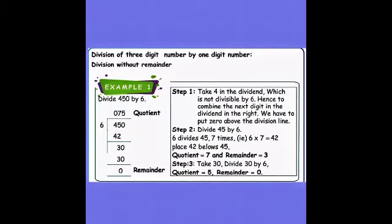Let's see the example sums. First one: division of three digit number by one digit number without remainder. Example 1: divide 450 by 6. Now we want to know the table of 6. The dividend is 450, divided by 6, that is the divisor.